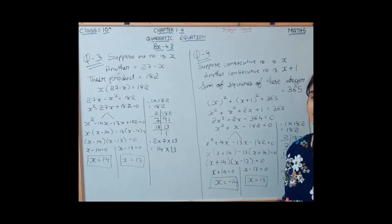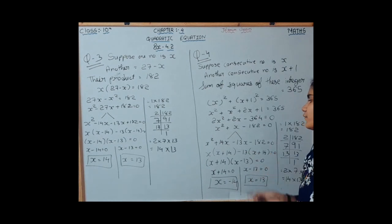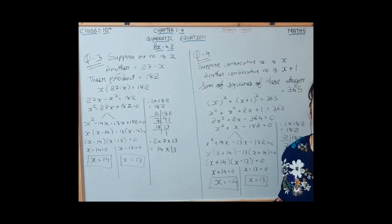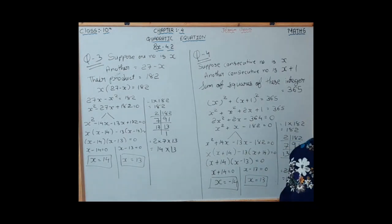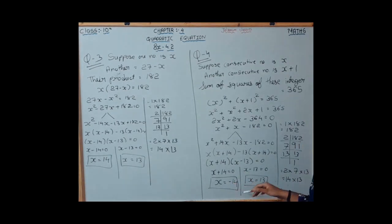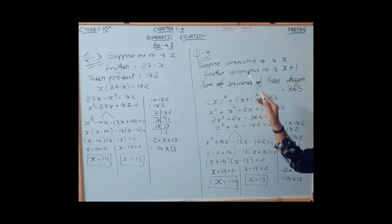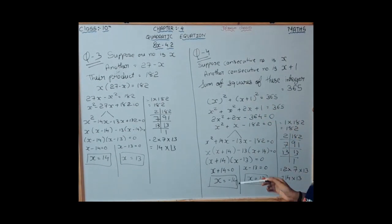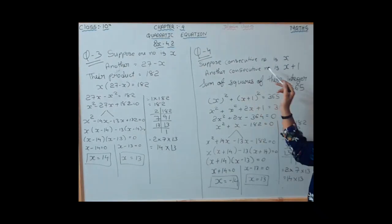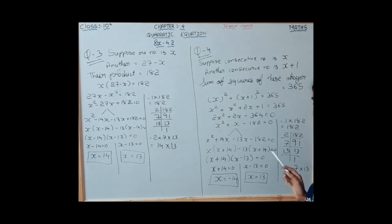The four-term quadratic equation is x squared plus 14x minus 13x minus 182 equals 0. By pairing and taking common, the roots of x are minus 14 and 13. So if the first consecutive positive integer is 13, the other is 14; since negative values are not valid here, we take x equal to 13.